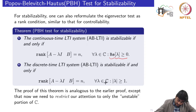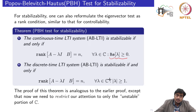For the discrete-time system we would have the same result, but those eigenvalues should be outside the unit circle or on the boundary of the unit circle.